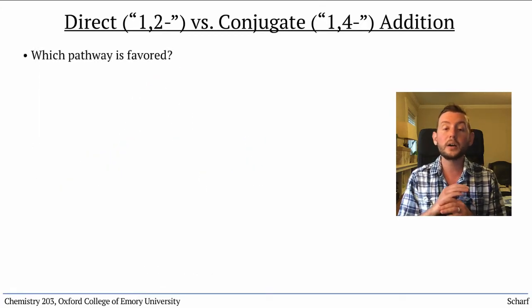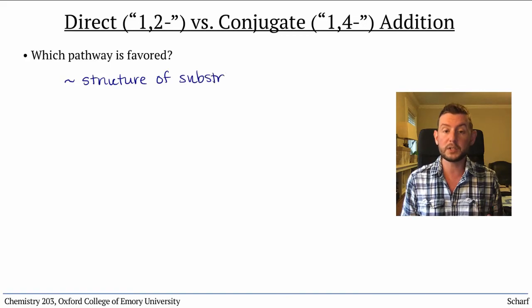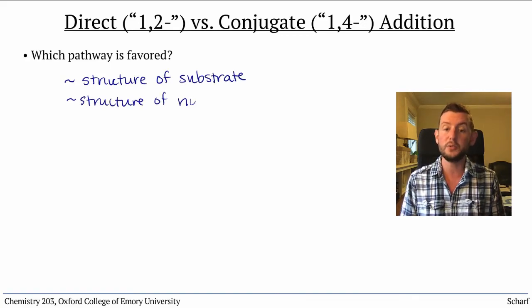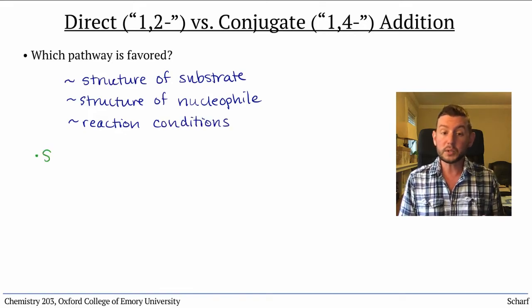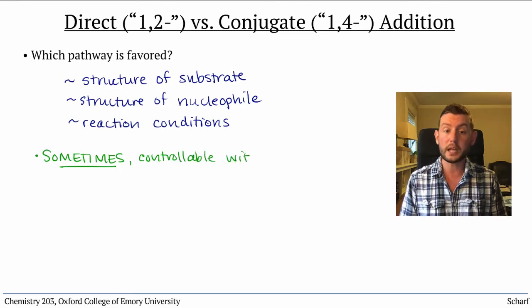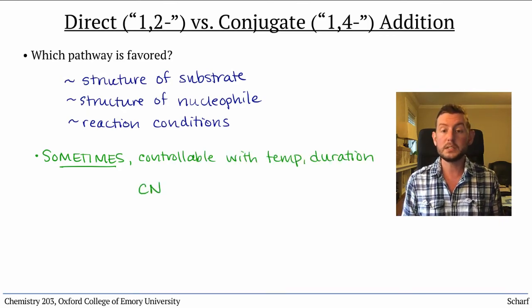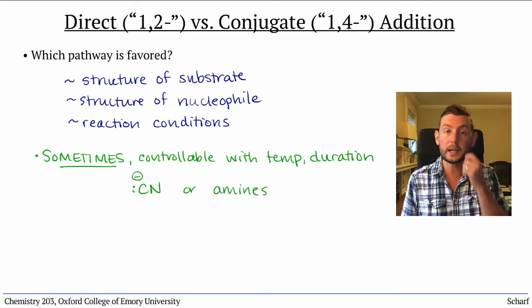There are many factors that influence whether direct or conjugate addition predominates in a given circumstance. It depends on the specific structures of the substrate, the nucleophile, and the reaction conditions. In some circumstances, we can control the outcome simply by controlling the temperature and the duration of the reaction. This is often the case when the nucleophile is cyanide or an amine.